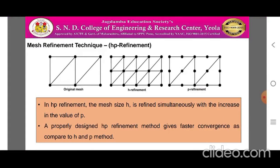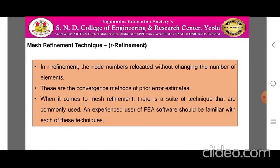The HP refinement method, shown in the figure, refines the mesh size simultaneously with an increased value of P. A properly designed HP refinement method gives faster convergence compared to the H and P methods individually. The H, P, and HP methods are generally used in today's finite element analysis problems. Along with these, the R refinement method relocates the node numbers without changing the number of elements — these are convergence methods of prior error estimates. An experienced user of finite element analysis software should be familiar with each of these techniques.